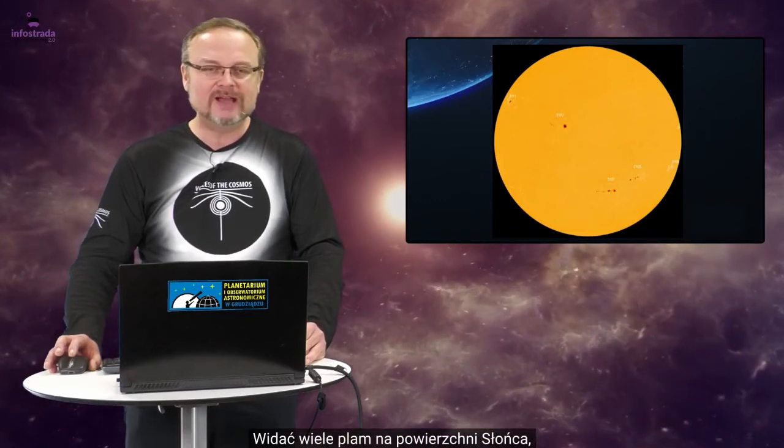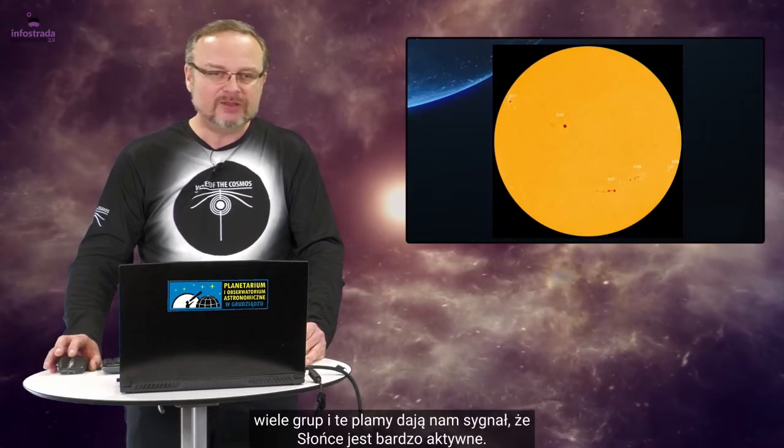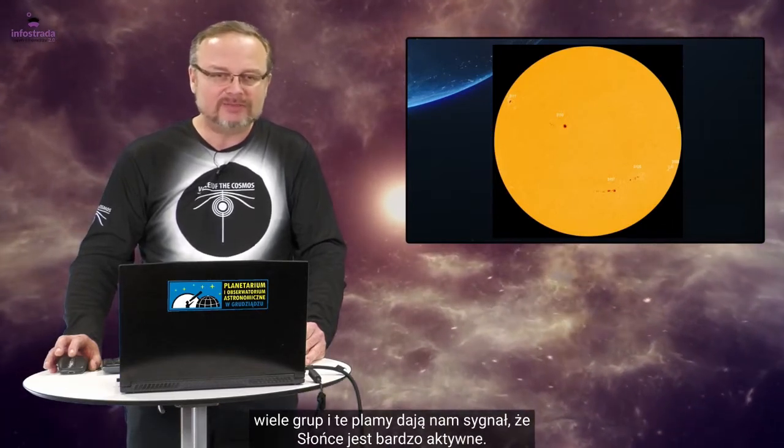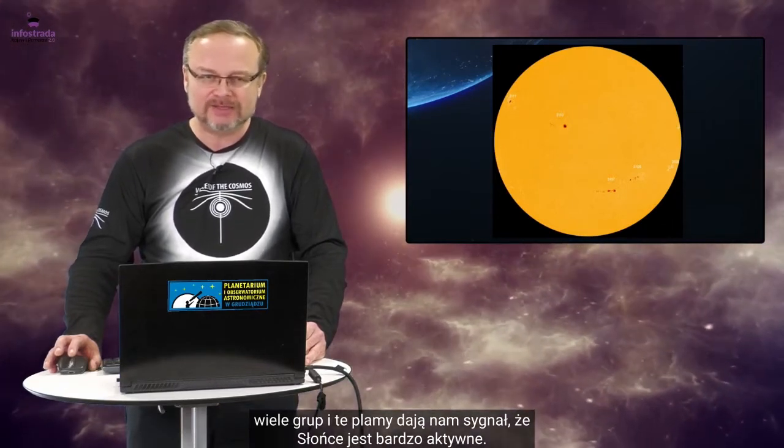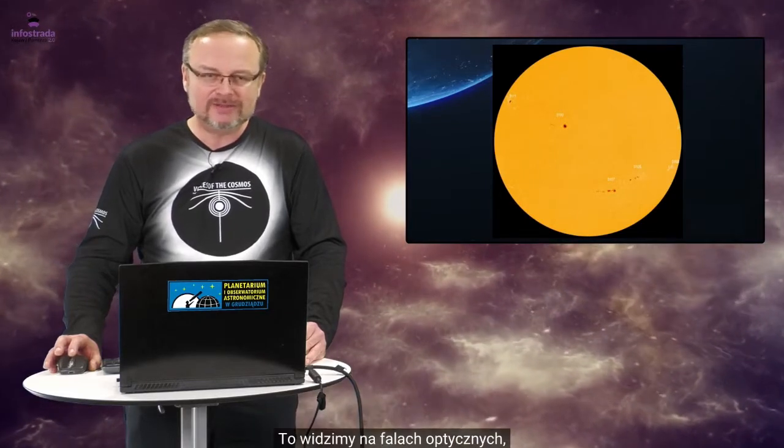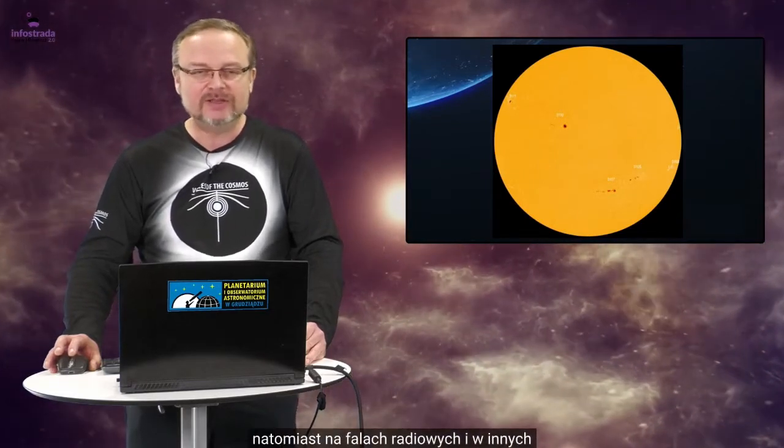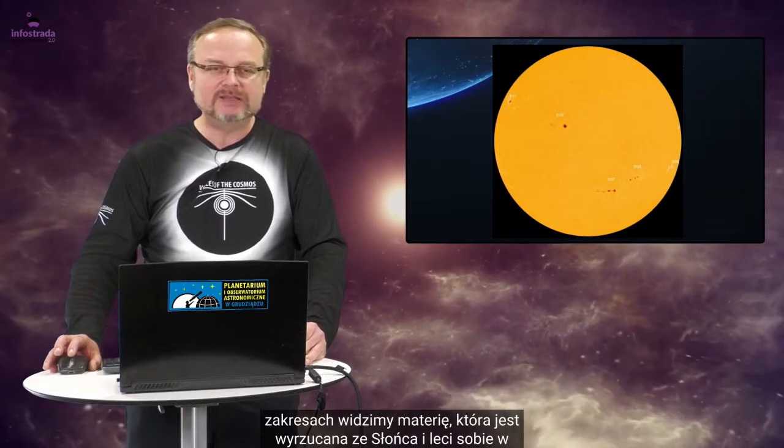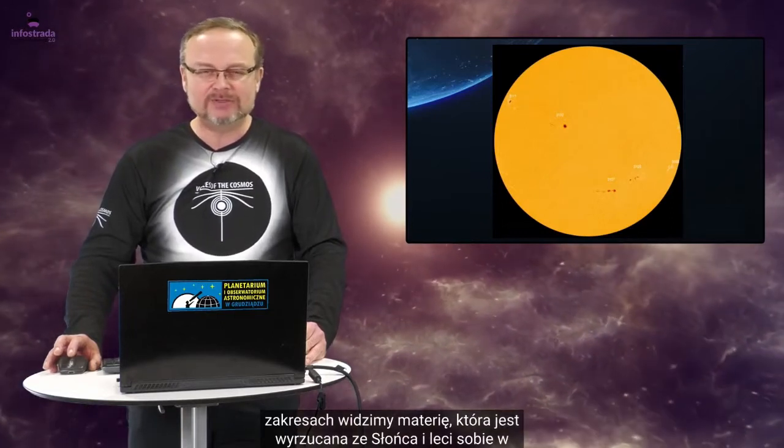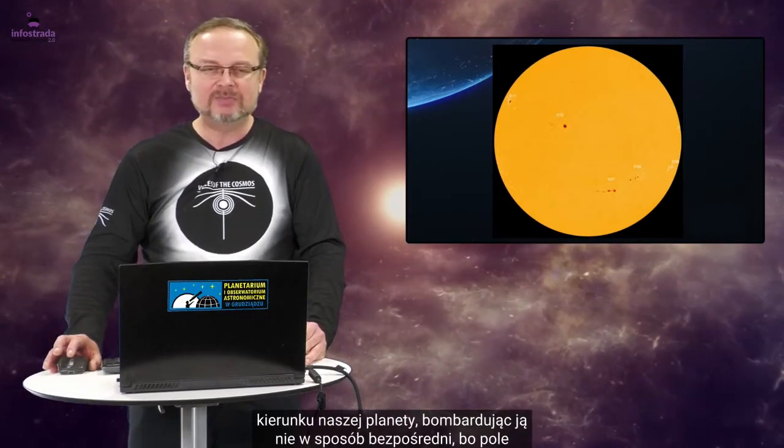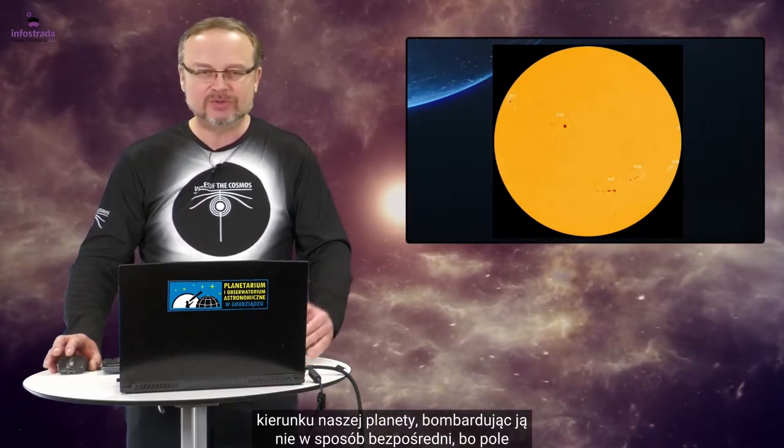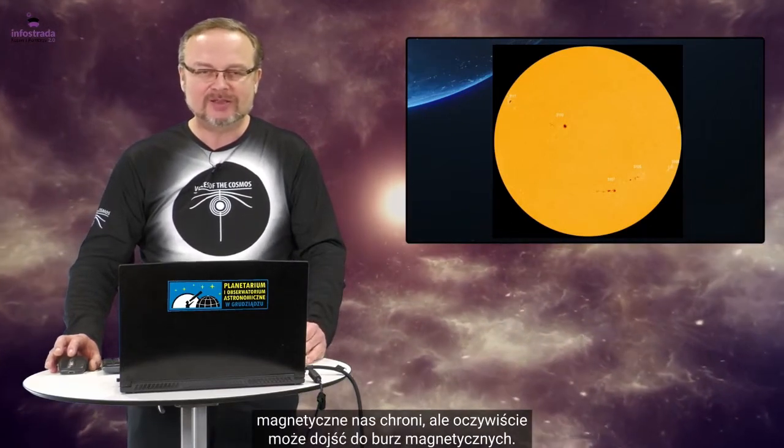Widać wiele plam na powierzchni Słońca, wiele grób. No i te plamy dają nam sygnał, że Słońce jest bardzo aktywne. To widzimy na falach optycznych, natomiast na falach radiowych i w innych zakresach widzimy materię, która jest wyrzucana ze Słońca i leci sobie w kierunku naszej planety, bombardując ją nie w sposób bezpośredni, bo pole magnetyczne nas chroni.